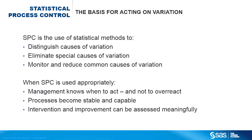Distinguishing between natural variation and variation due to special causes is the basis of statistical process control. Reducing all variation is the ultimate goal, but the first step is to eliminate problems in the process that create unusual variation. After a process is made stable and predictable, you can work to reduce common cause variation.